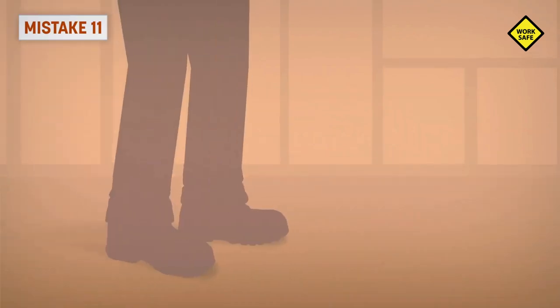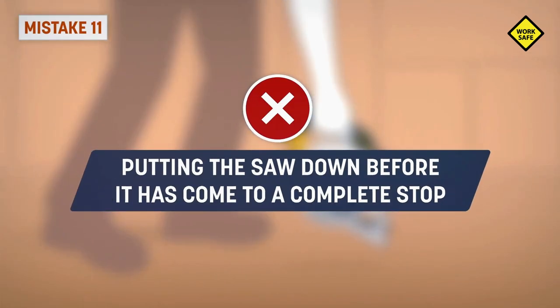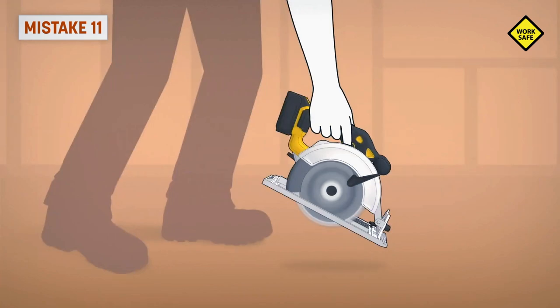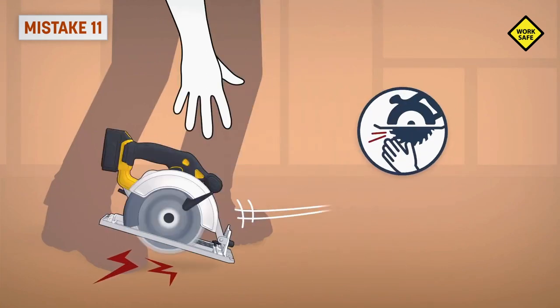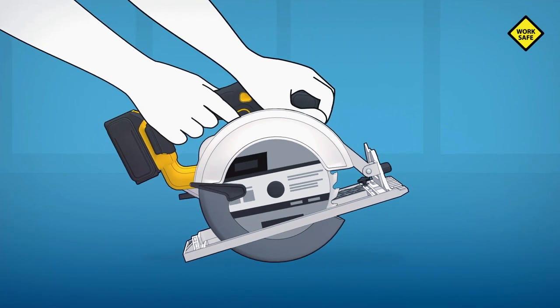Mistake 11: Putting the saw down before it has come to a complete stop. An unprotected coasting blade will cause the saw to walk backwards, cutting whatever is in its path. Always wait for the blade to stop moving and for the guard to be closed before putting the saw down.